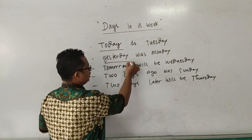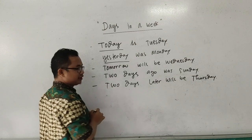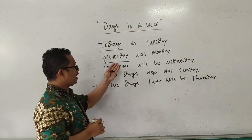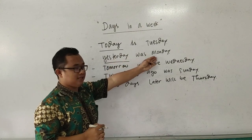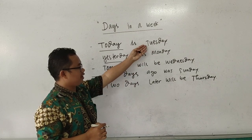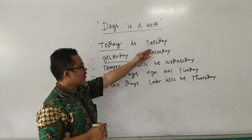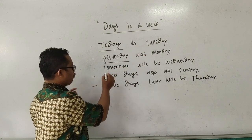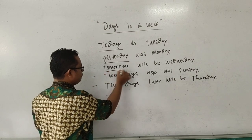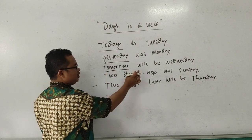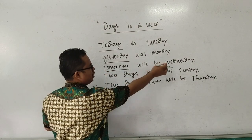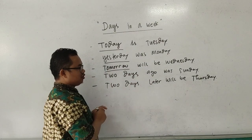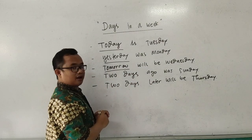Yesterday artinya adalah kemarin. Atau kemarin adalah hari Senin. Jadi kalau hari ini adalah Selasa, maka kemarin adalah hari Senin. Tomorrow, besok. Tomorrow will be Wednesday. Maka besok adalah hari Rabu.